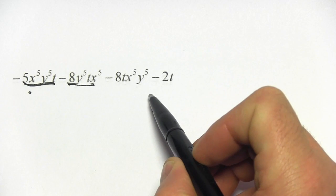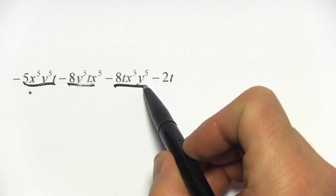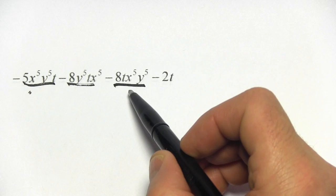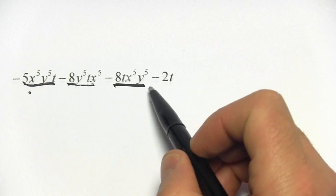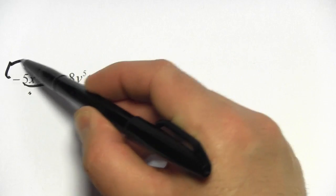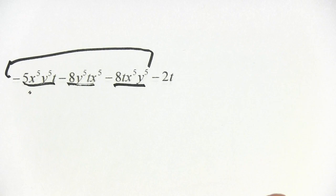And here we have t, x to the 5th, y to the 5th. Well, that's a like term as well with those two because t is to the 1st power, x and y to the 5th powers. So all three of these terms can be combined. They're like terms.